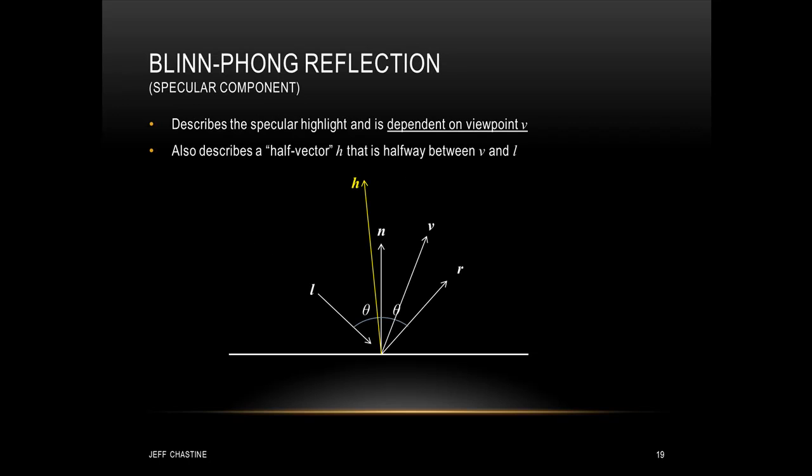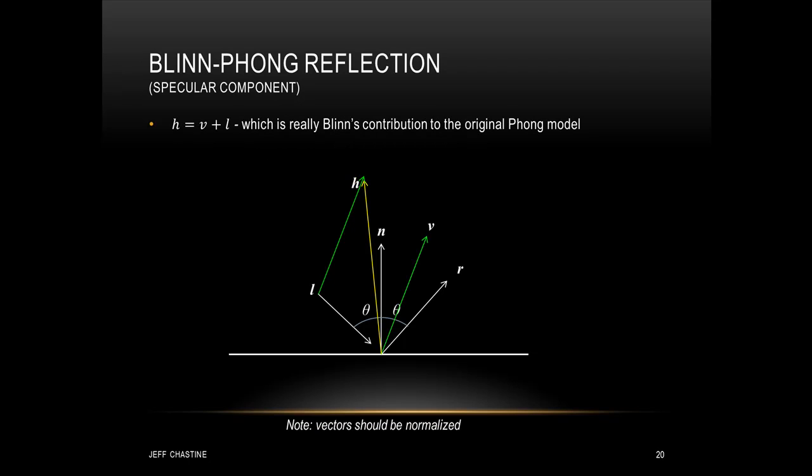Now moving on to the specular component, this one is dependent on the camera's viewpoint. So in this case what we're going to do is create something called a half vector, which we'll denote as H, and that's the vector that's halfway between vector V and vector L. Now the question is, how do you calculate it? Well, in this Blinn-Phong reflection model, you can calculate H by adding vectors V and L together. Now I've tried to visualize that in the image that you see here. You can see that I've copied V and moved it to the tail of L, and by visually adding V and L together, you can see that we get H. And one last note, yes, these vectors need to be normalized.